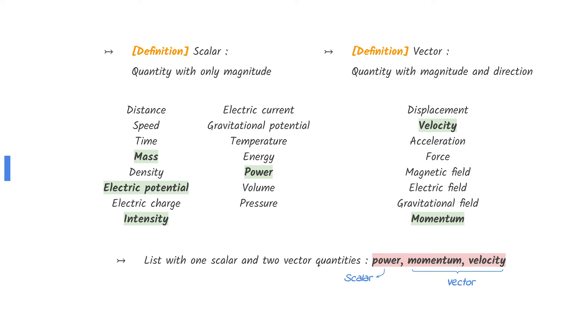The list with one scalar and two vector quantities is power, momentum, and velocity.